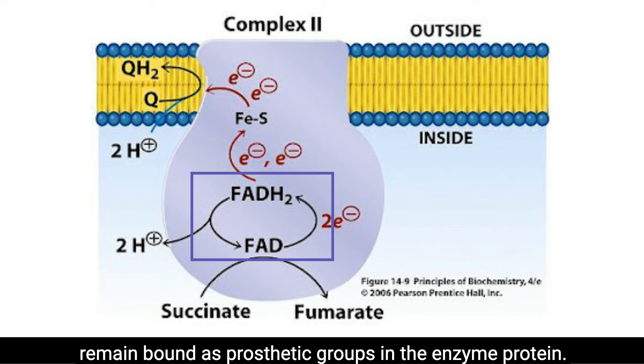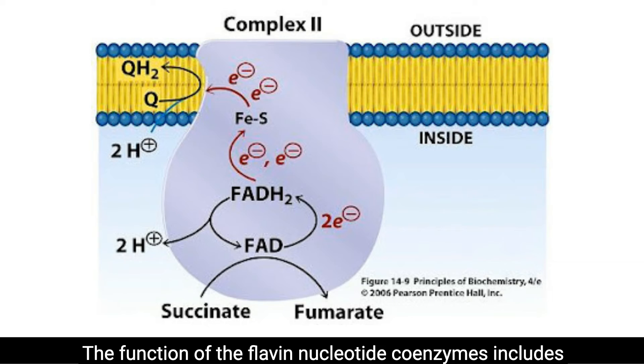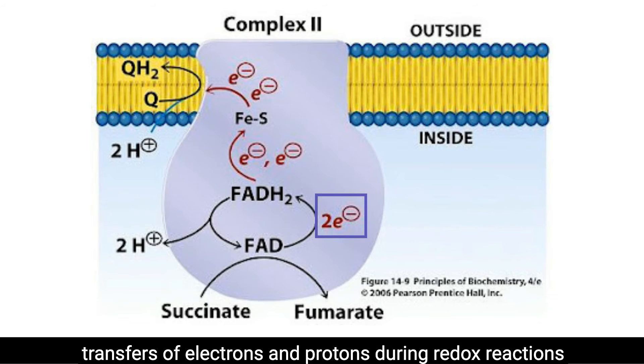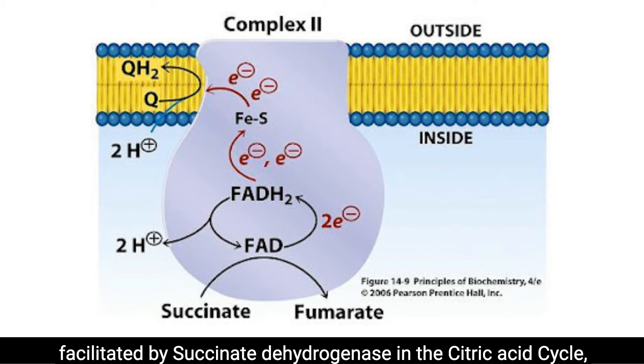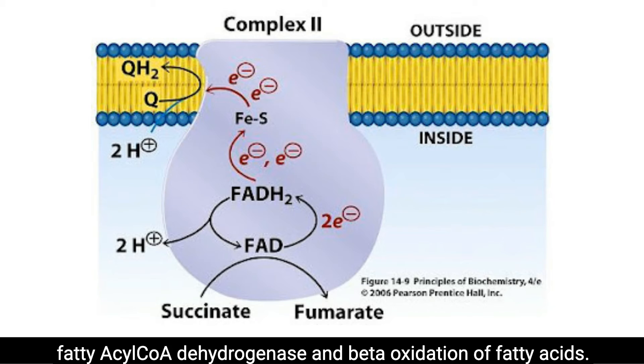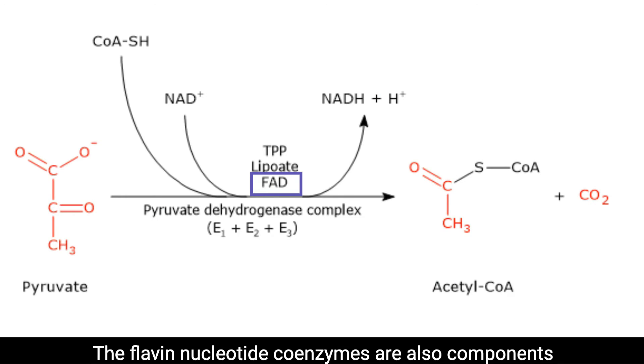The flavins always remain bound as prosthetic groups in the enzyme protein. The function of the flavin nucleotide coenzymes includes transfers of electrons and protons during redox reactions facilitated by succinate dehydrogenase in the citric acid cycle, fatty acyl-CoA dehydrogenase, and beta-oxidation of fatty acids. The flavin nucleotide coenzymes are also components of alpha-ketoglutarate dehydrogenase and a component of the pyruvate dehydrogenase complex.